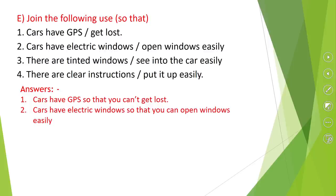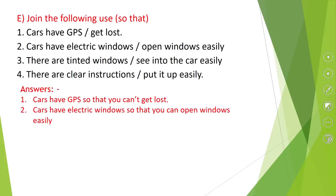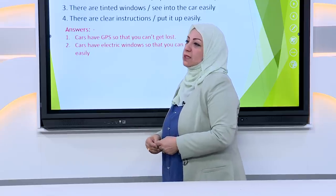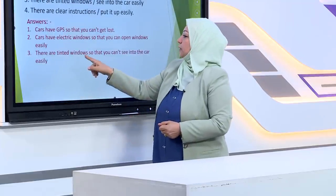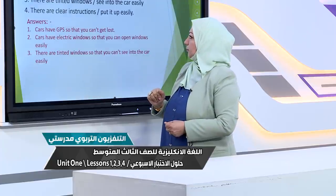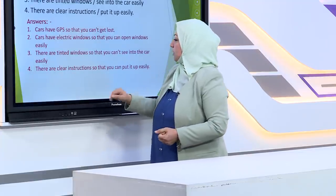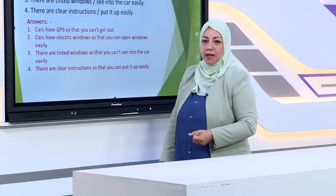Number two: cars have electric windows — open windows easily. Answer: cars have electric windows so that you can open windows easily. Number three: there are tinted windows — see into the car easily. Through tinted windows you cannot see inside, so we use 'can't': there are tinted windows so that you can't see into the car easily. Number four: there are clear instructions — put it up easily. Answer: there are clear instructions so that you can put it up easily.